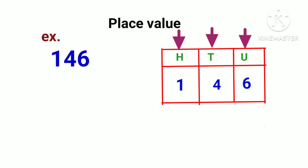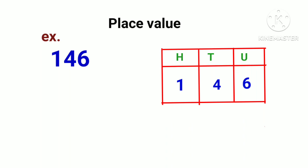This is the house of numbers. H means 100s — the number in H's house, its place value is multiplied by 100. T means 10s — the number in T's house, its place value is multiplied by 10. So here, 1 is in the H place, so 1 multiplied by 100 is 100. So the place value of 1 is 100.